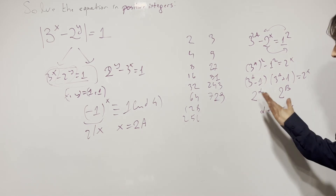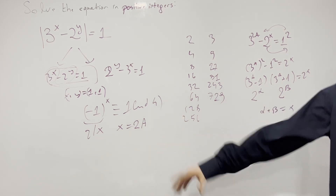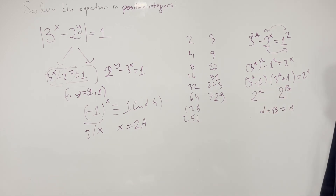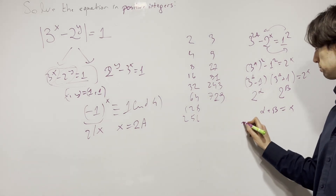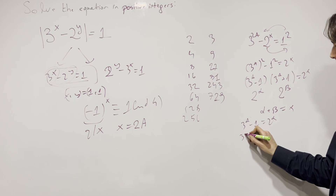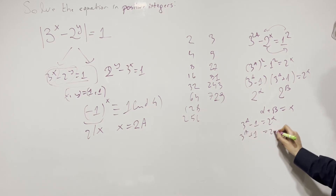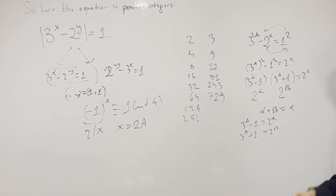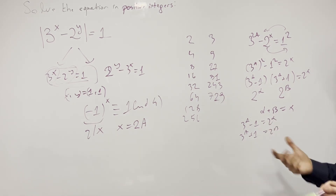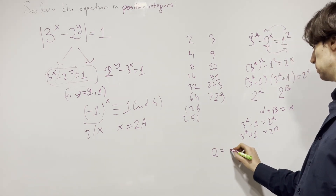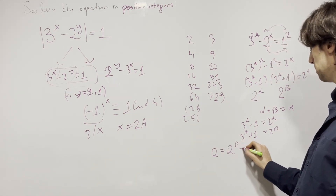This must be 2 to the power of some alpha and 2 to the power of some beta, where alpha plus beta equals y. Alpha and beta are non-negative integers. So: 3 to the a minus 1 equals 2 to the alpha, and 3 to the a plus 1 equals 2 to the beta. How are you ever going to solve this? Subtract to get 2 equals 2 to the beta minus 2 to the alpha.